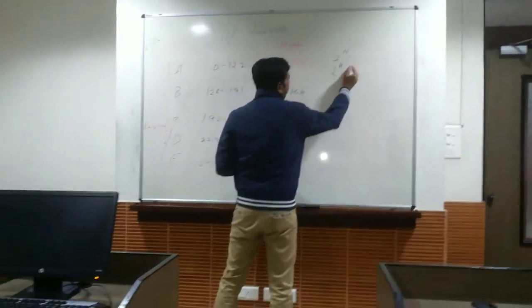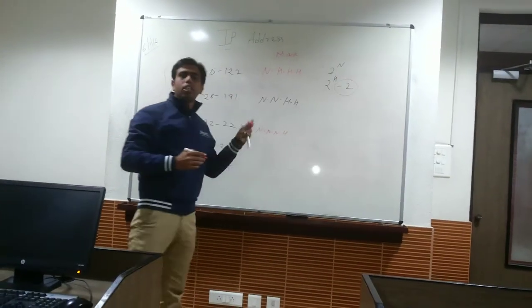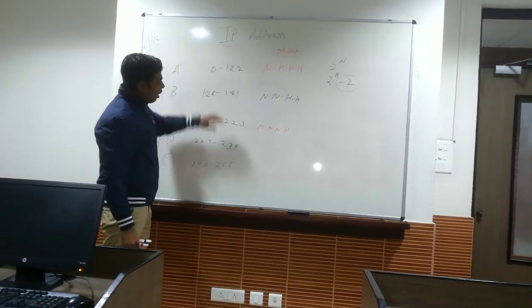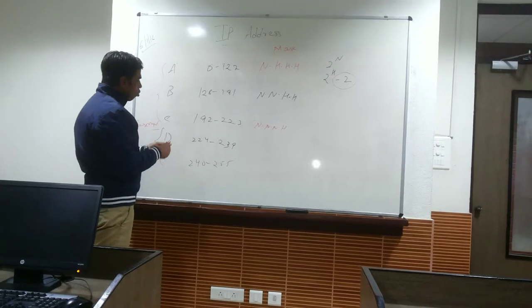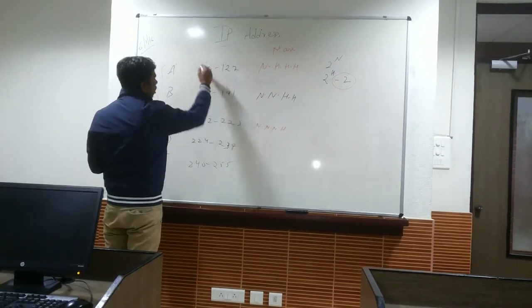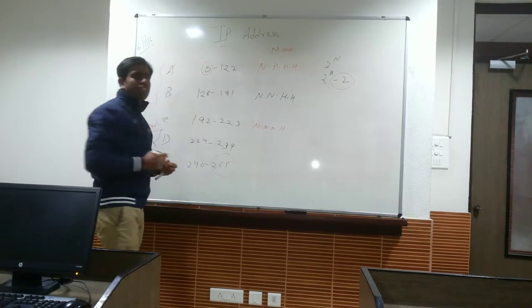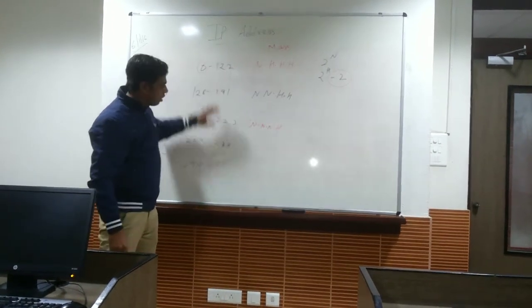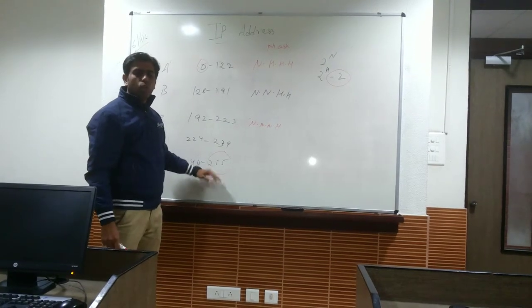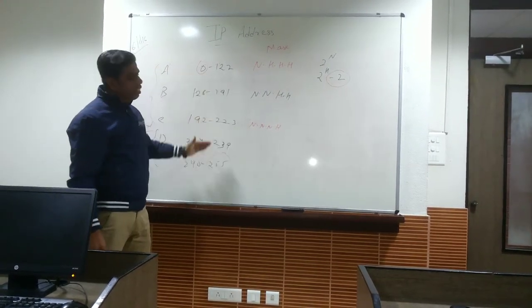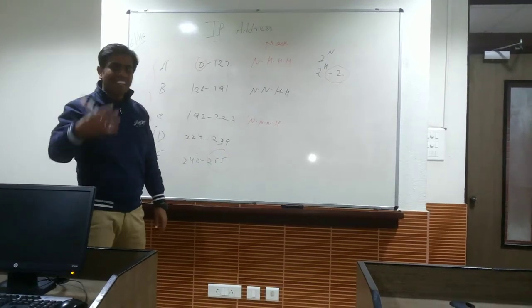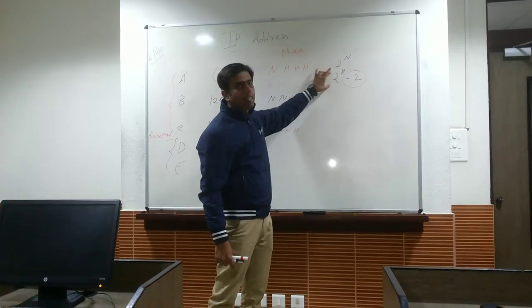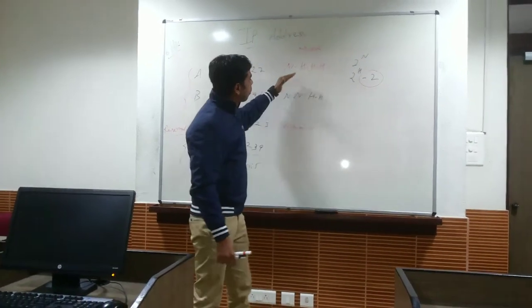Now, this concept is very important that why we are doing this minus 2 in case of host. So, friends, why we are doing this? The 0 and the 255, these two addresses, the 0 and this 255 addresses have been already been reserved for a network address and a broadcast address. We cannot assign this address to any of the host. That is why we are making it less than 2 by the total number of host. This formula is applies everywhere.